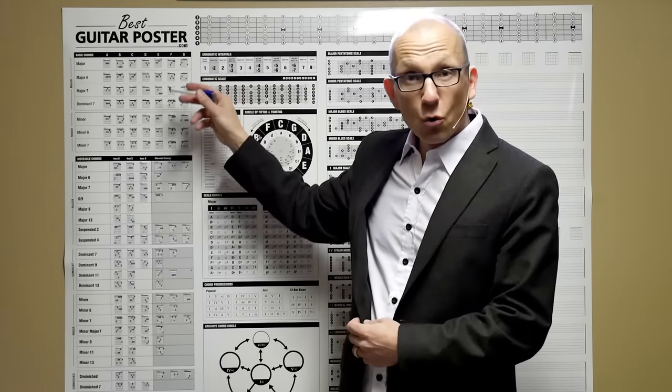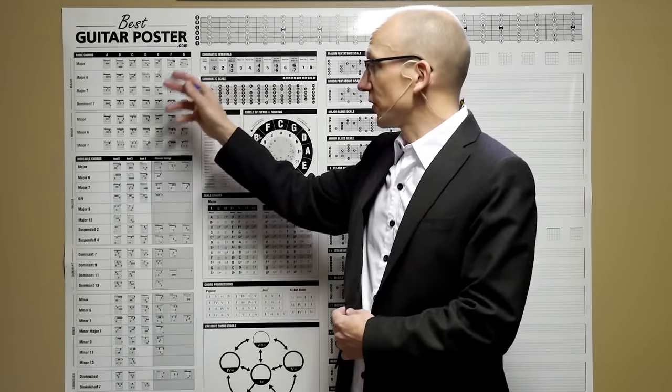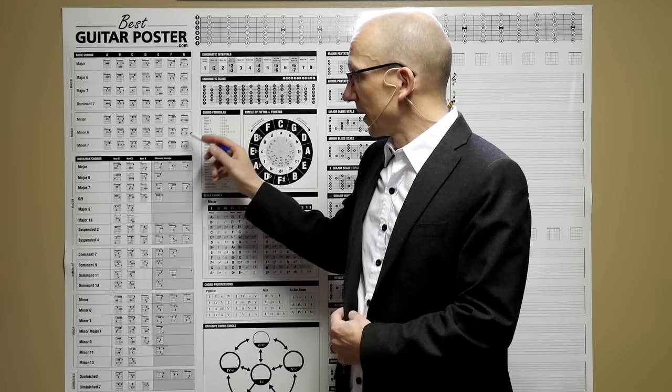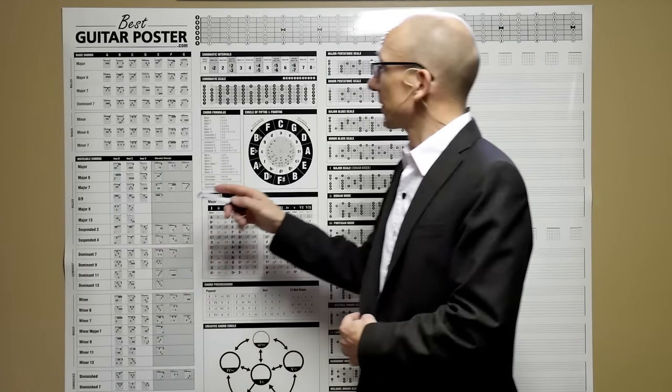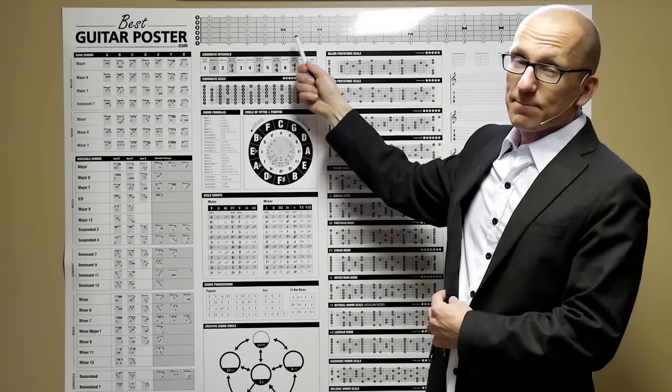Over here we have chord inversions for the most common types of chords. Down here we have movable chords, we have a fretboard map up here,